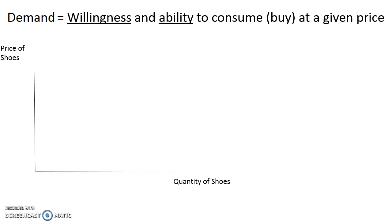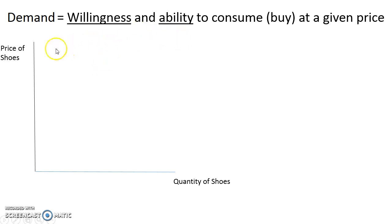Demand is the willingness and ability to consume or buy at a given price. We don't consume or eat everything — that just means buy. In order to have demand, you have to have a willingness and ability. If I have a willingness and I want to buy a really expensive pair of shoes, but I don't have the ability to do that, then I don't demand it.